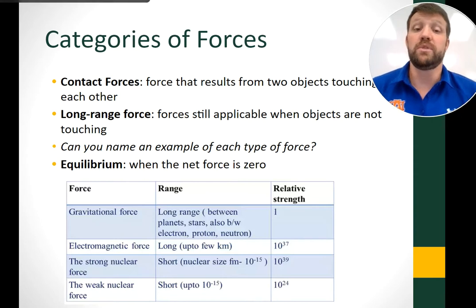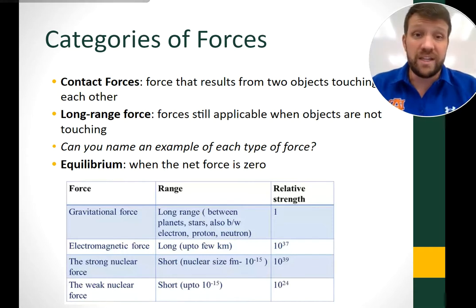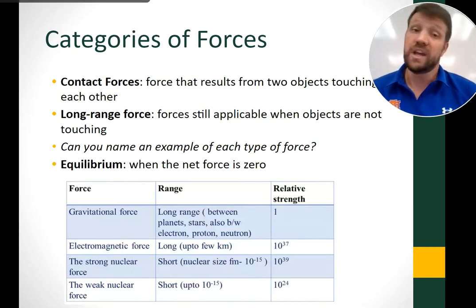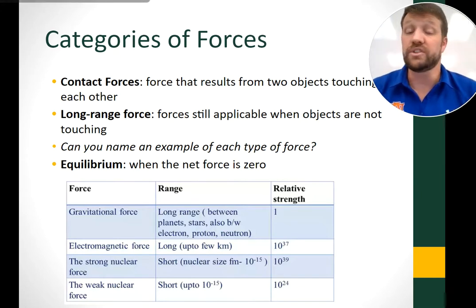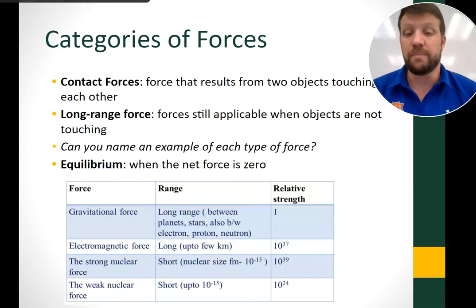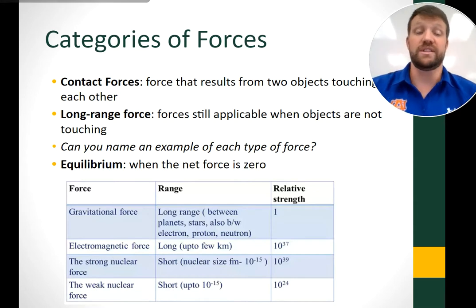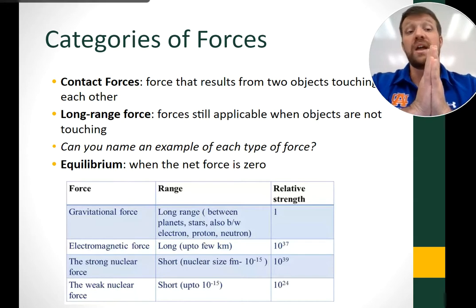A long-range force is applicable when objects are not touching. The biggest example is gravity — if I toss an object into the air, it takes a parabolic path and comes back down because gravity is pulling on it, even though the objects aren't touching. Equilibrium is a state when the net force is zero. If I push with both hands and there's no motion, that's an equilibrium state.